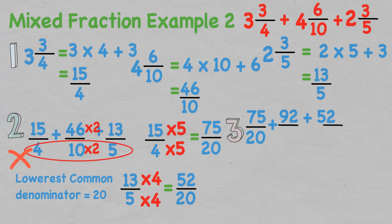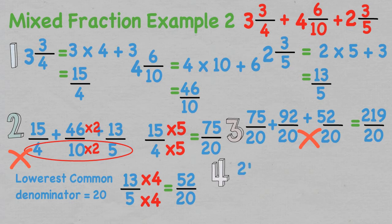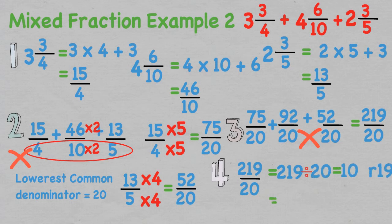We add the numerators together, which equals 219 over 20. We then simplify this improper fraction into a mixed fraction by dividing the numerator by the denominator: 219 divided by 20 leaves us with 10 and 19 left over. Therefore our final answer is 10 and 19 over 20.